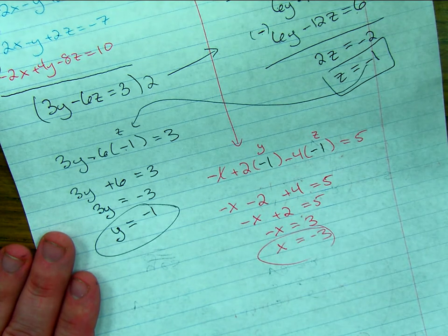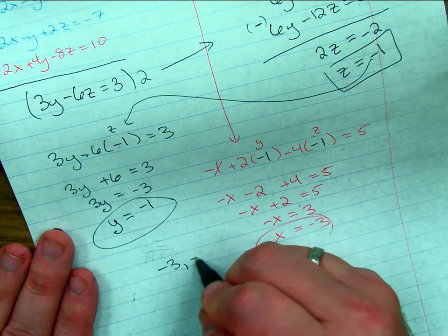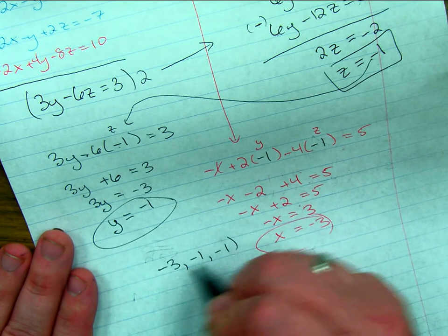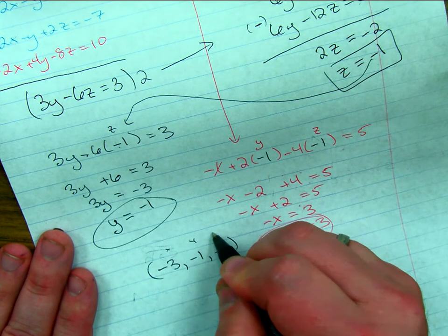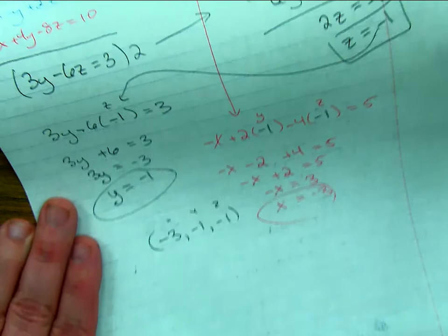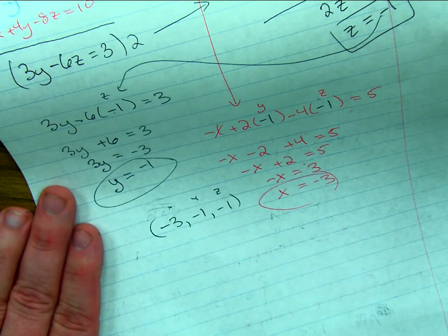That's the last piece to the puzzle. And I get a final answer of negative 3 comma negative 1 comma negative 1. That's x, y, z. Yay!